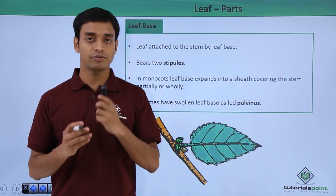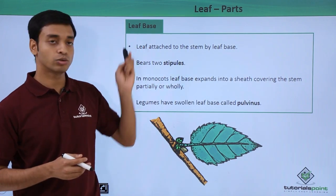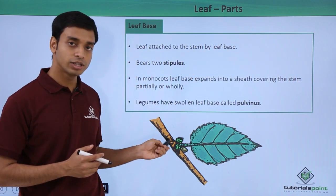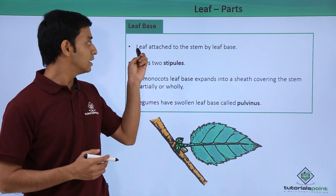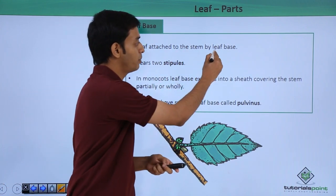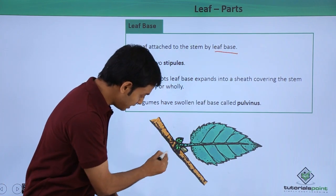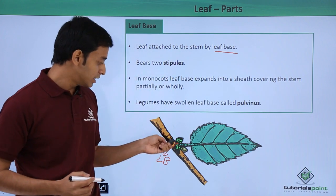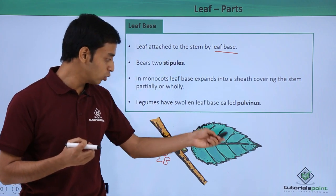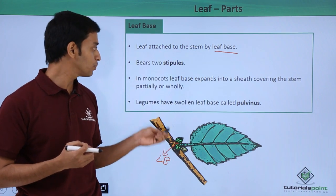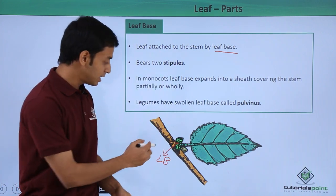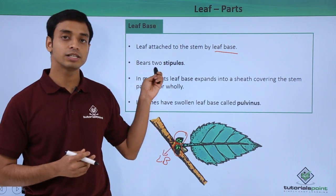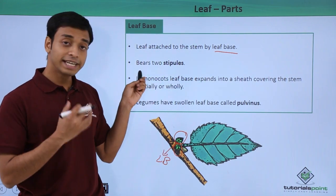Now let us talk about the different structures of a typical leaf. The first structure we will discuss is known as the leaf base. Looking at this diagram, the leaf attaches to the stem by the leaf base — this is the area which attaches the whole structure of the leaf to the stem. These leaf bases bear two leaf-like structures known as the stipules.